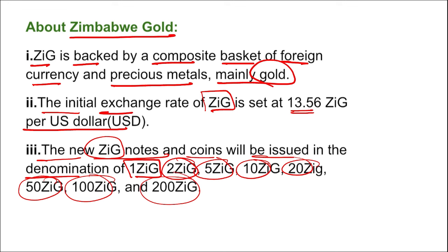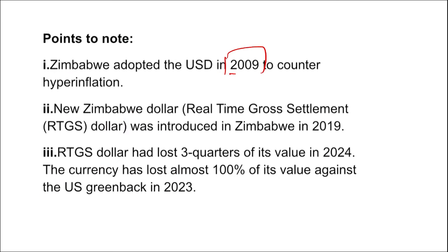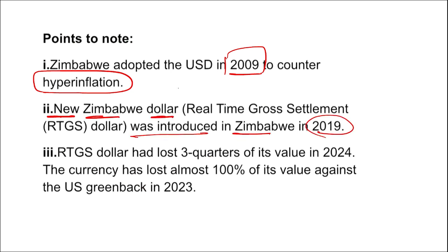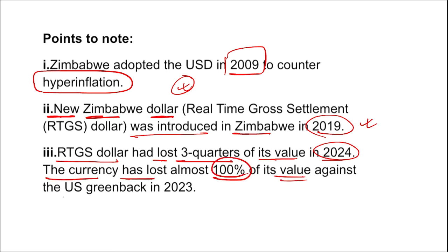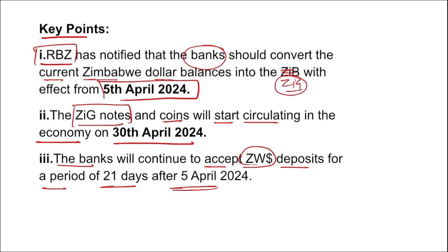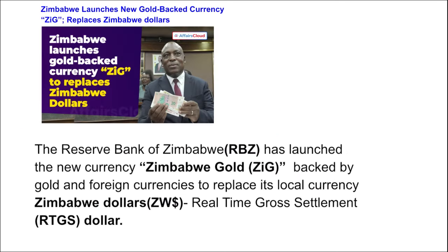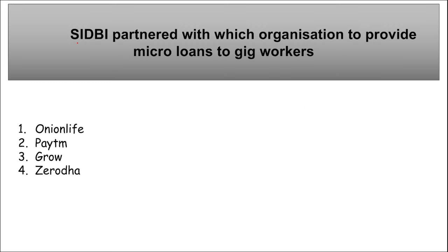Zimbabwe adopted the US dollar in 2009 to counter hyperinflation. A new Zimbabwe dollar was introduced in 2019. The RTGS dollar has lost three-quarters of its value in 2024, and the currency lost almost 100% of its value against the US greenback in 2023. Now in 2024, Zimbabwe has launched the gold-backed currency, ZiG.